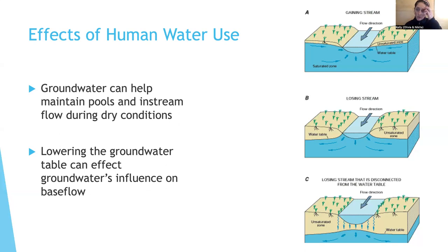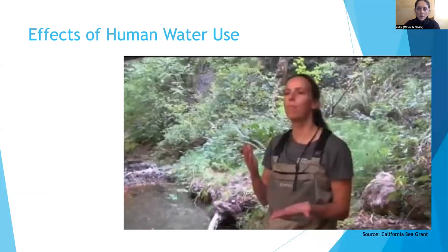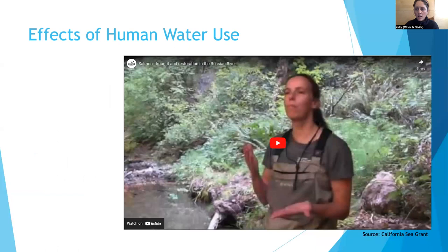The dry season is both when humans use the most water and when young salmon are under the most stress. Lowering the groundwater table or taking water directly from creeks and rivers can reduce base flows for juvenile salmon. Reduced in-stream flow can lead to increased water temperature, reduced dissolved oxygen, increased pollutants, and reduced food sources. The reduction in base flows can increase the severity or duration of this stressful period. Climate change is expected to exacerbate existing low flow conditions because the dry season may last longer or groundwater recharge might be drastically reduced.